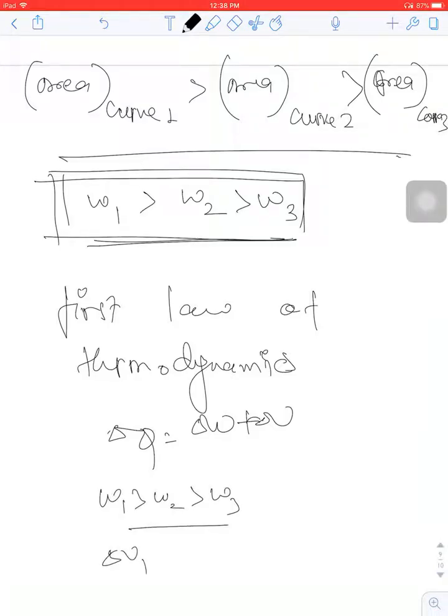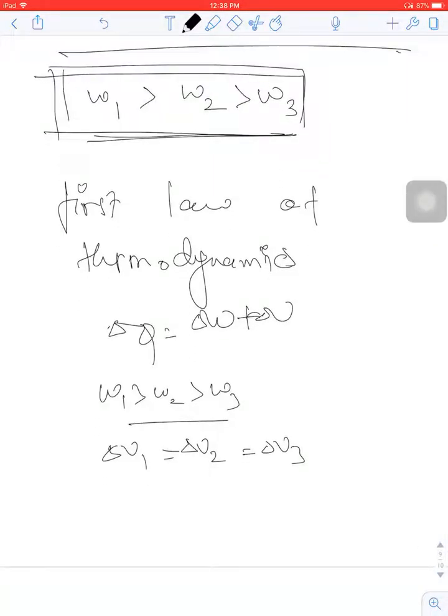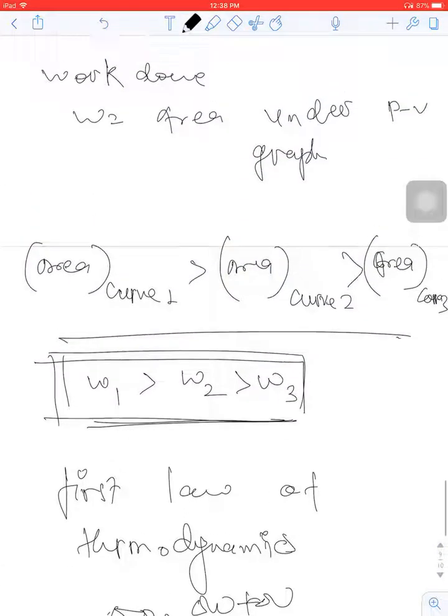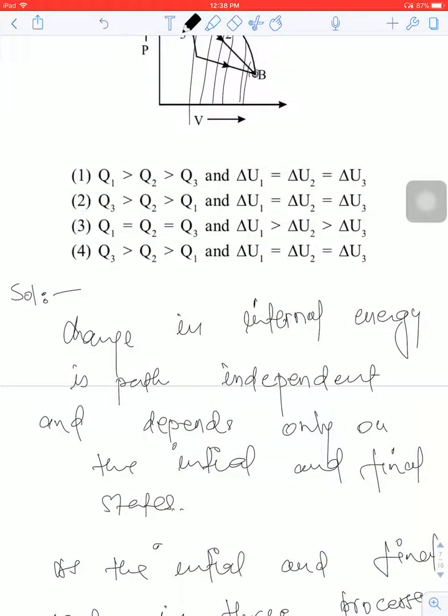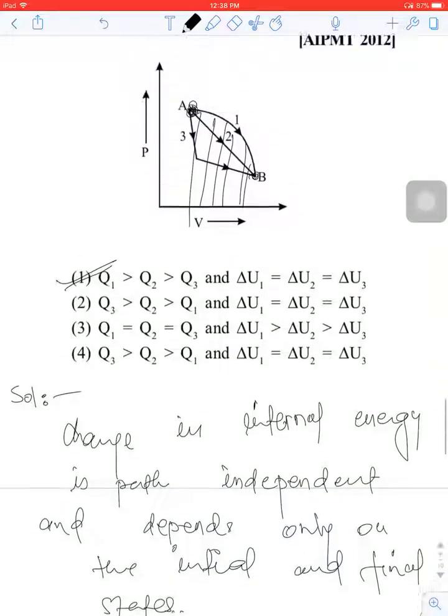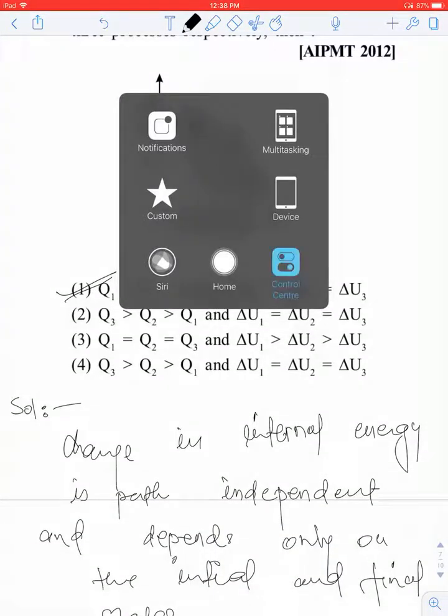Since W1 greater than W2 greater than W3, and del U1 equals del U2 equals del U3, we have Q1 greater than Q2 greater than Q3. So option number one is correct.